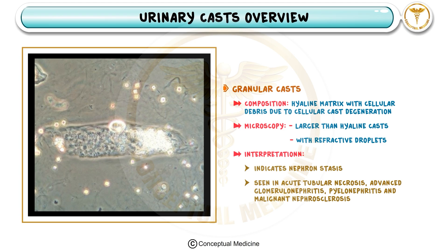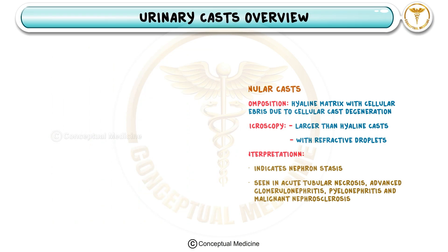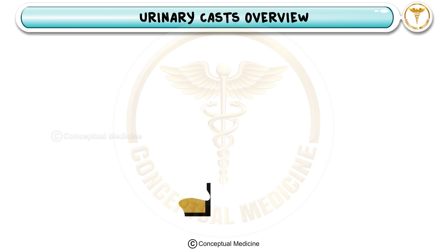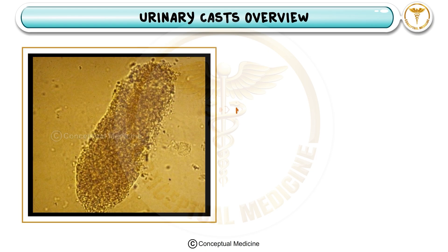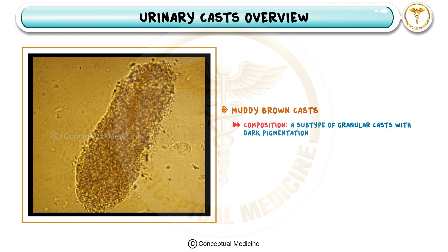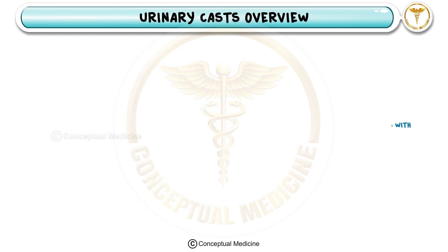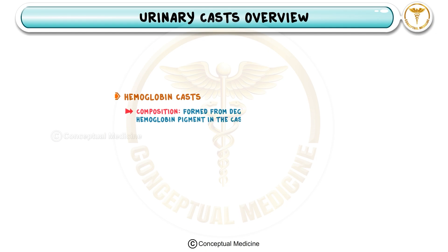A specific subtype of granular casts is the muddy brown cast, which is darker and strongly associated with acute tubular necrosis. Moving on, hemoglobin casts are formed when red blood cells break down, releasing hemoglobin which gets trapped in the cast.